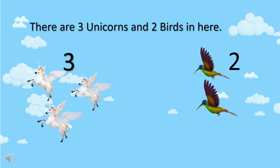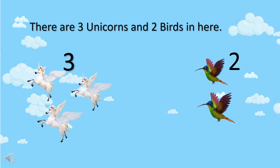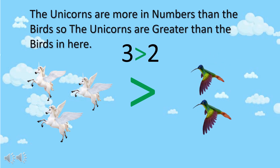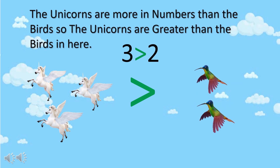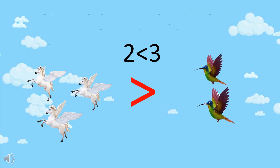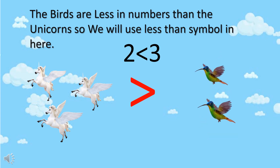In this example there are three unicorns and two birds. The unicorns are more in numbers than the birds, so the unicorns are greater than the birds. The birds are less in numbers than the unicorns, so we will use the less than symbol here.